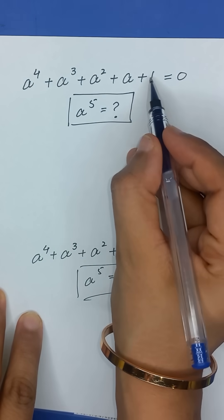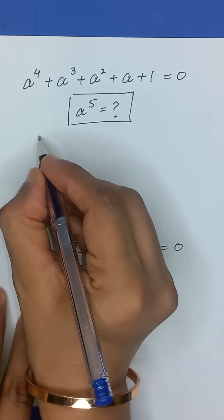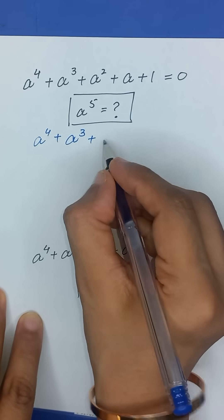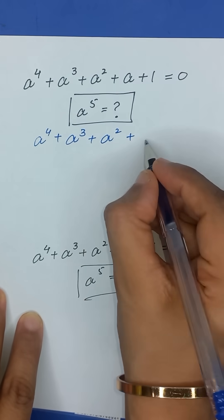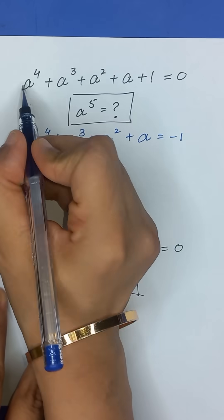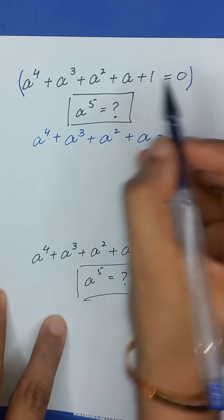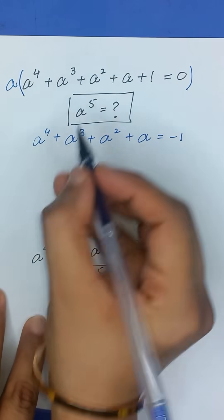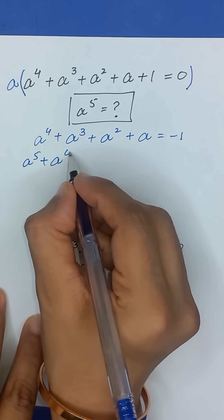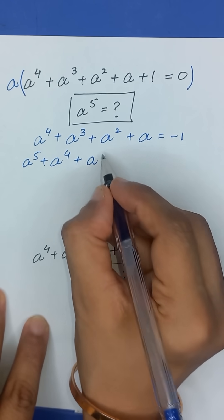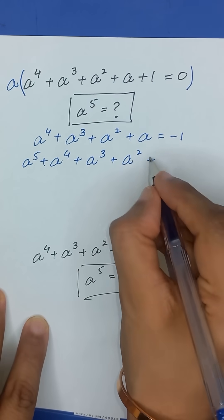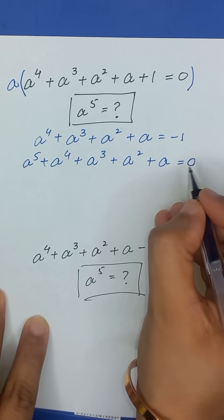First of all, I will take this positive 1 to the right hand side. So it will become a to the power 4 plus a cube plus a squared plus a is equal to minus 1. Now, I will multiply this whole equation with a. So it will become a to the power 5 plus a to the power 4 plus a to the power 3 plus a squared plus a is equal to 0.